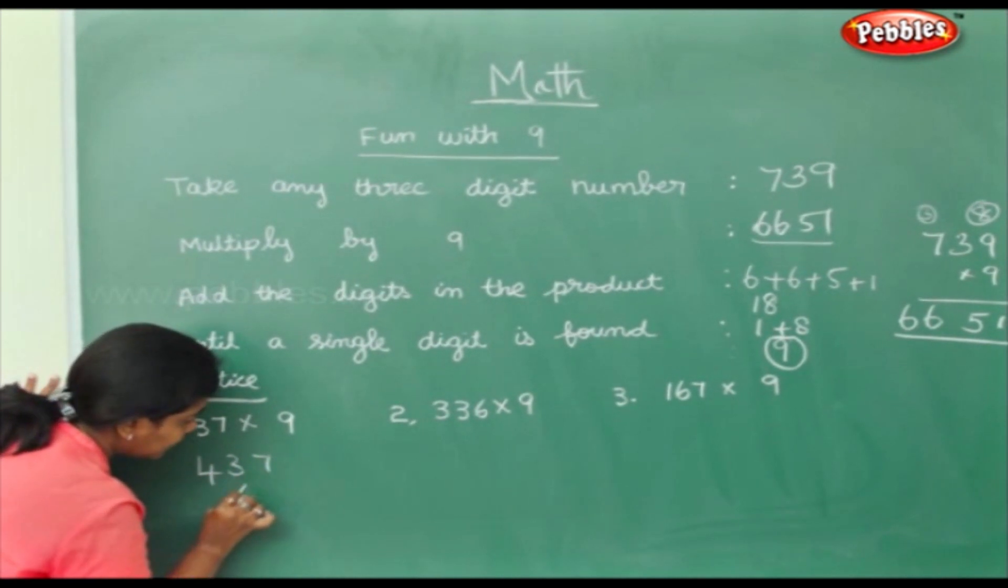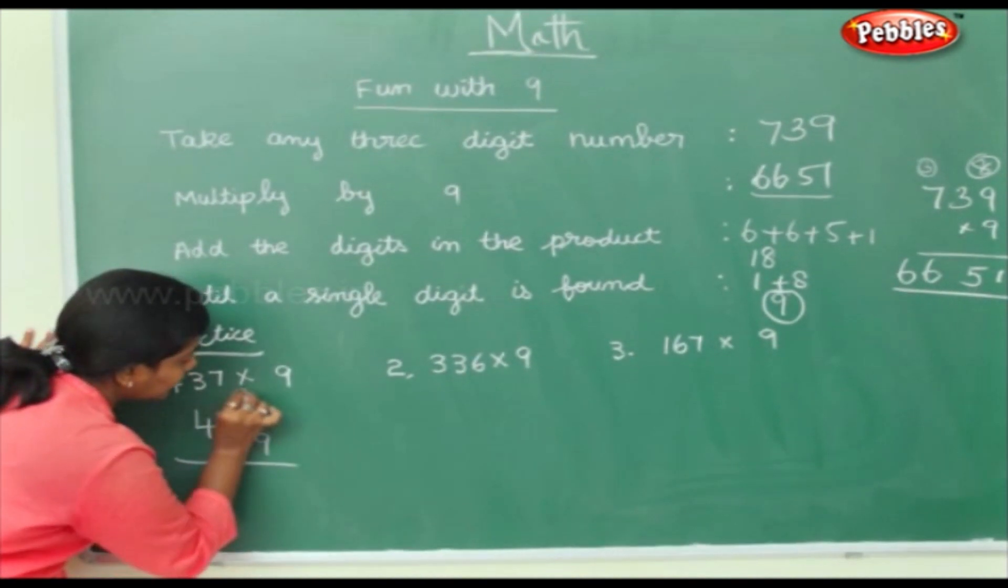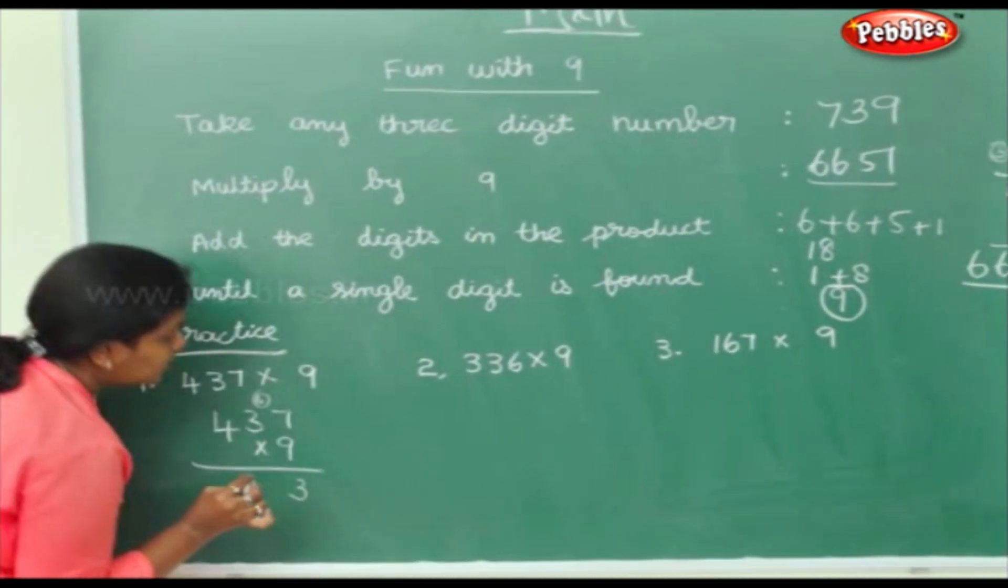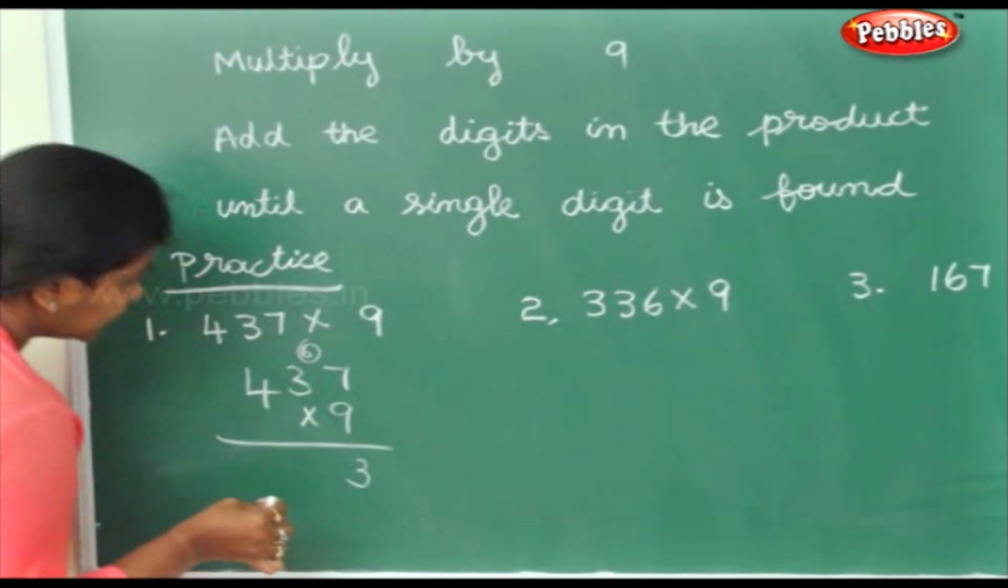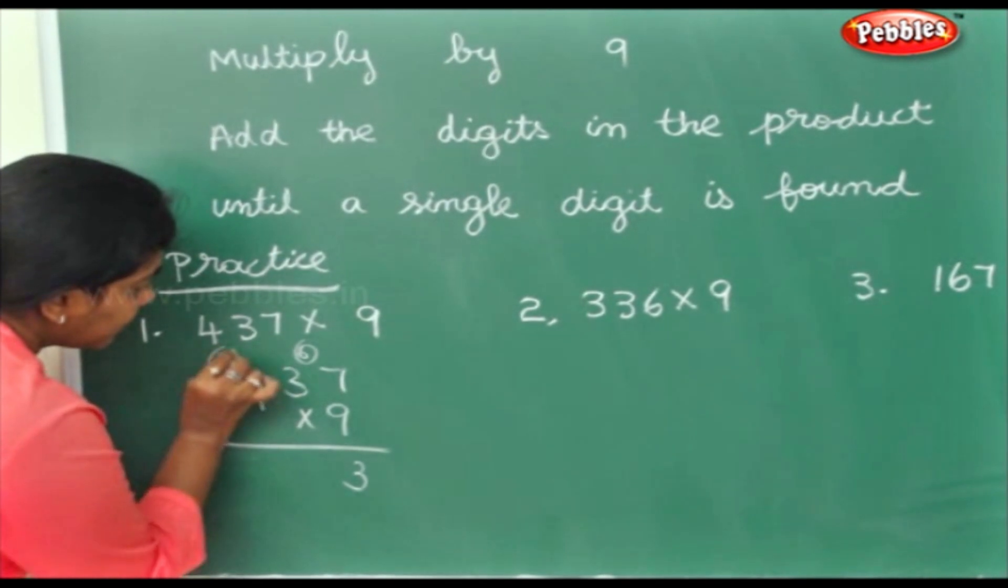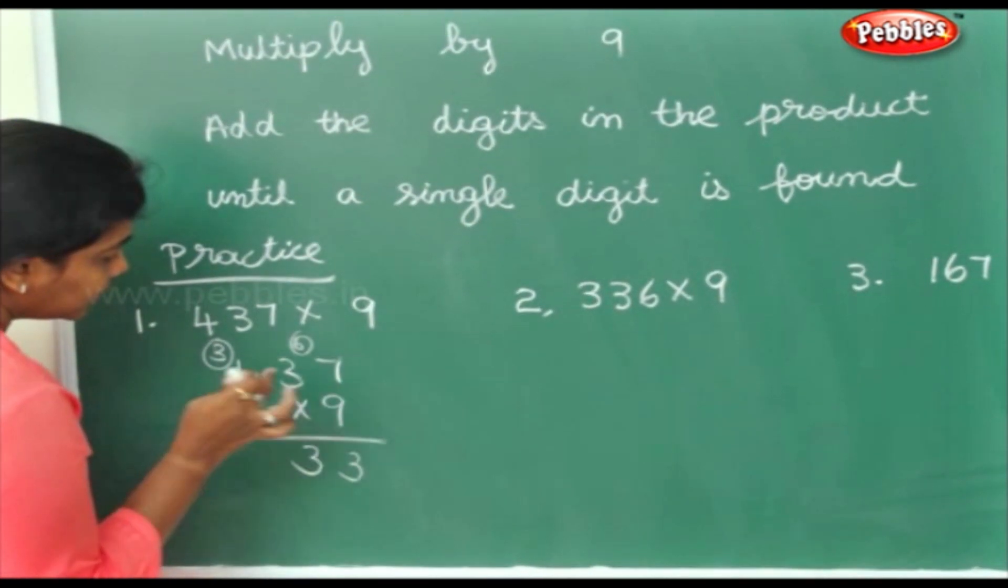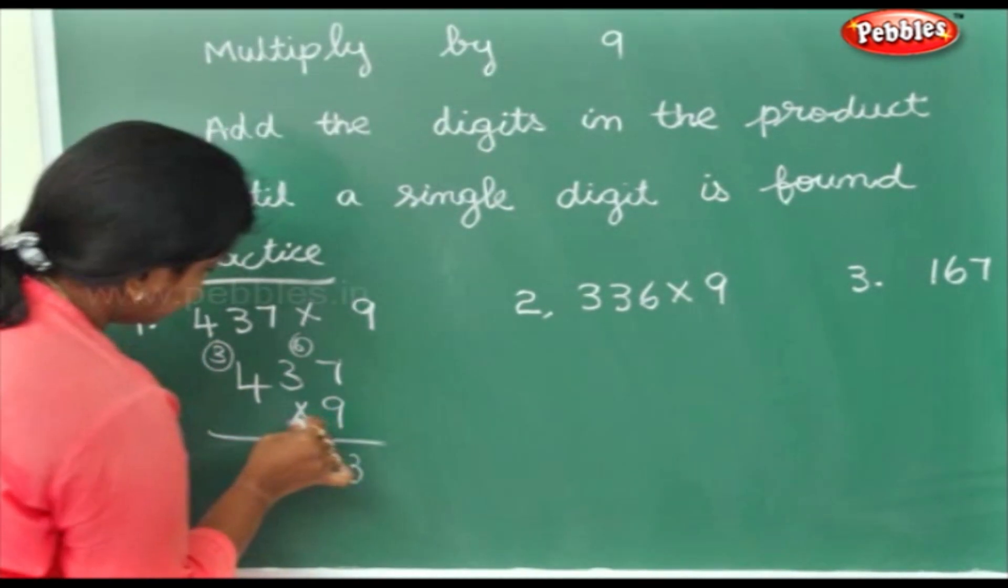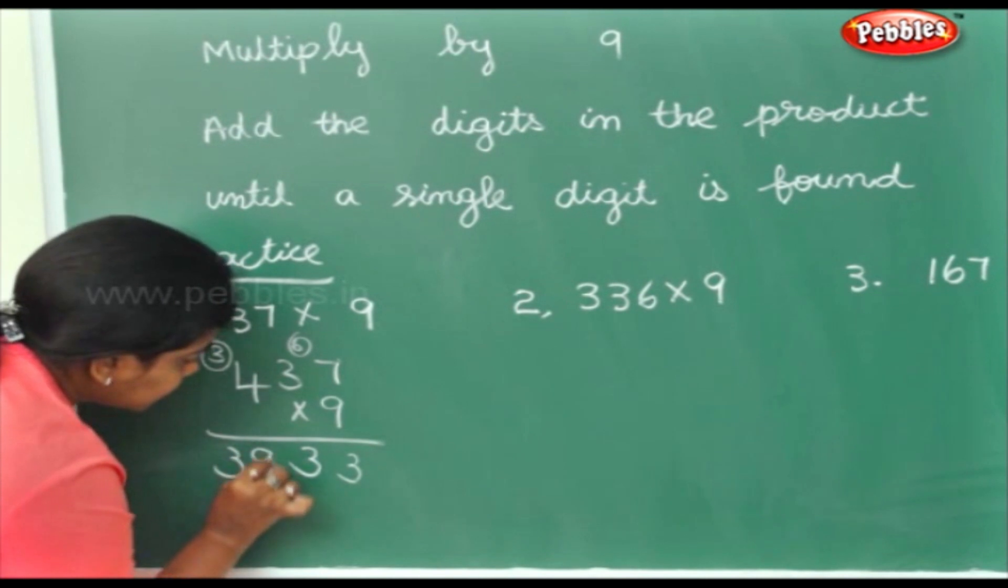437 into 9. 9 7's are 63. 9 3's are 27. 27 plus 6, 33. 9 4's are 36. 36 plus 3, 39.